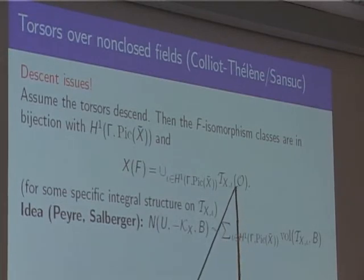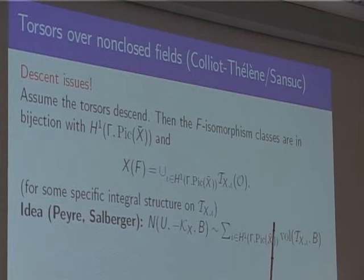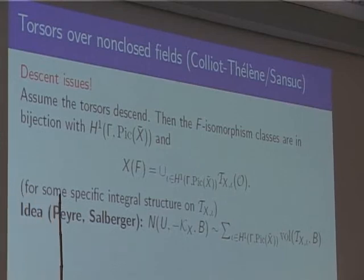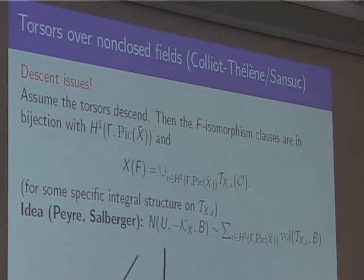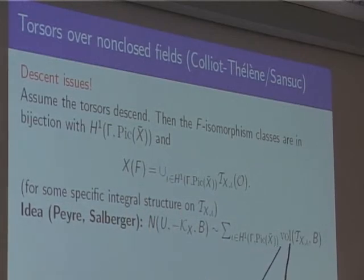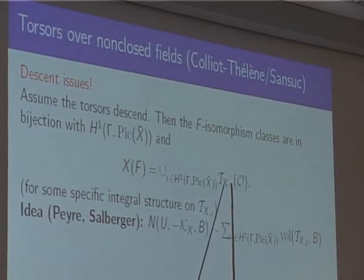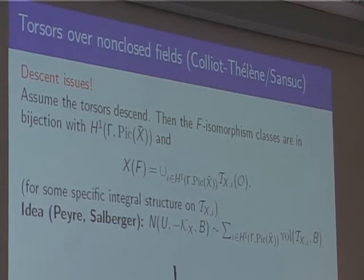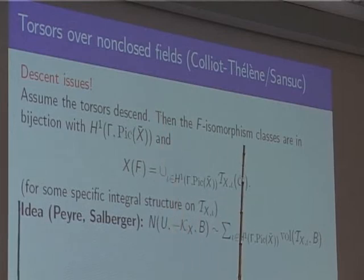Rational points are in the union of rational points from these different torsors. We pick canonical representatives for rational points on the torsor — these will be integral points — with ambiguity given by the action of the integral points of the Picard torus. You pick fundamental domains for these actions, apply the height inequality, and then — following the idea of Peyre and Salberger — the counting of rational points on the original variety is given by certain volumes on the torsor.